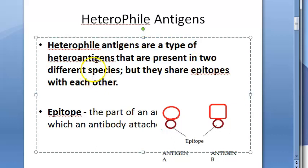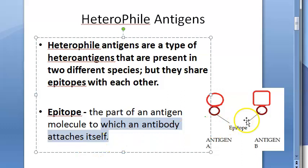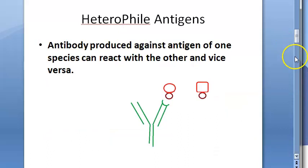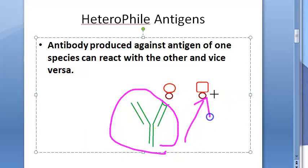Heterophile antigens are types of hetero antigens present in two different species, but they share epitopes with each other. The epitope is the part of an antigen to which the antibody attaches itself. An antibody produced against the antigen of one species can react with the antigen of another species and vice versa.